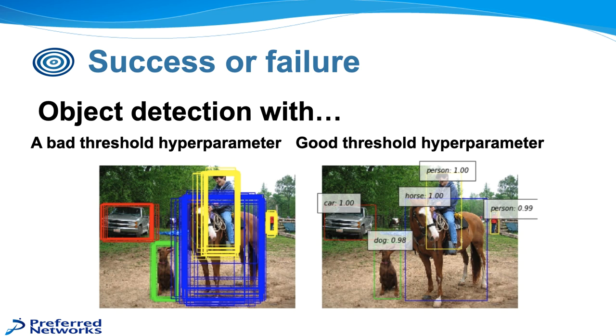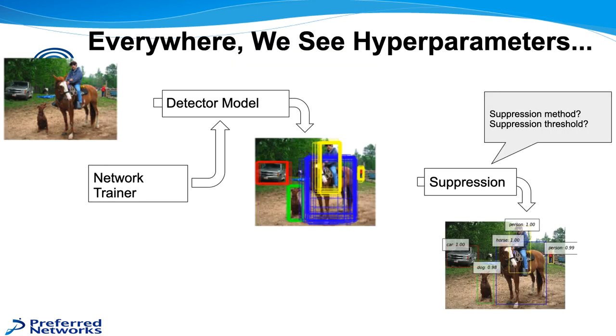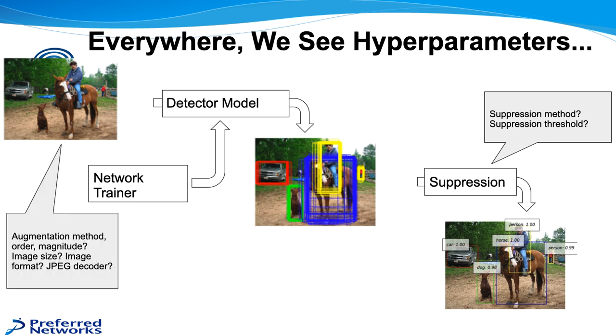So we have an example here of object detection. This is from our competition in the Google image recognition contest on Kaggle. The bad threshold hyperparameter gives a whole number of hyperparameters, and when we tune this, we're able to get down to a very clear picture of one object per box. But the thing is, we see hyperparameters everywhere. We just talked about the suppression method and the suppression threshold, which is what enabled us to give those nice boxes for our application. But if you start just at the beginning, the network trainer or the image itself, what kind of augmentation method you're going to use, what order, what magnitude are you going to do for the augmentations.